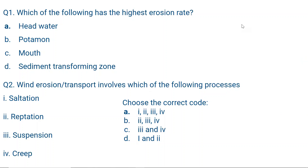Question number one: Which of the following has the highest erosion rate? A. Headwater, B. Potamum, C. Mouth, D. Sediment Transforming Zone. The correct option is A — Headwater. Headwater is the beginning or the source of the river. Here the river is at its highest velocity and the erosion is maximum.